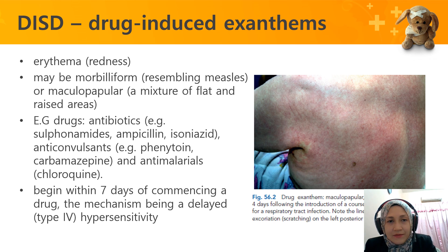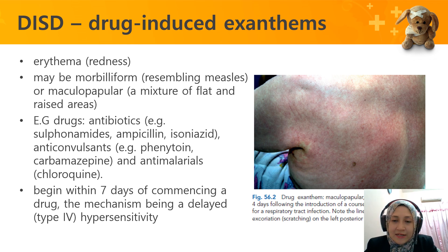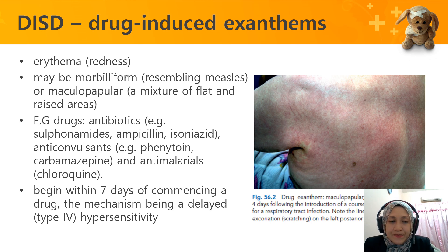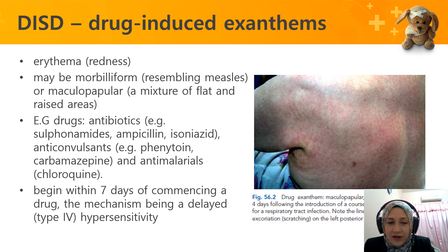The second group of drug-induced skin disorders is drug-induced exanthem. The presentation is erythematous — redness of the skin — and can be morbilliform, resembling measles, or maculopapular, a mixture of flat and raised areas. Drugs implicated include antibiotics such as sulfonamide, ampicillin, isoniazid, phenytoin, carbamazepine, and anti-malarials. It can begin within seven days of starting the drug via a delayed hypersensitivity mechanism.